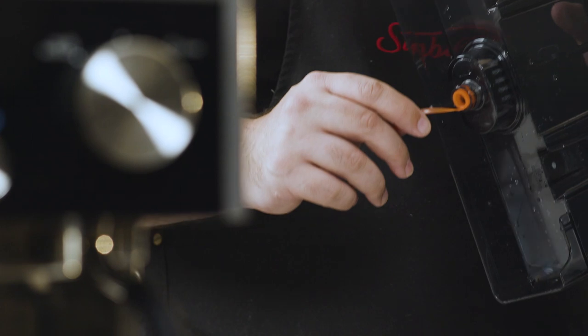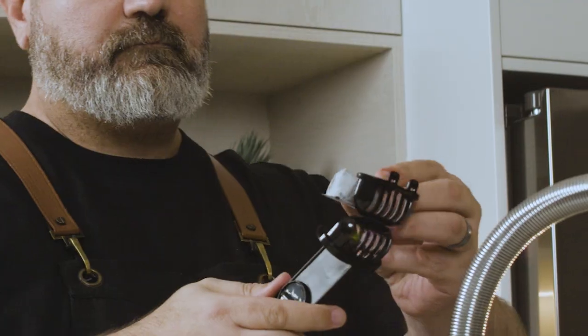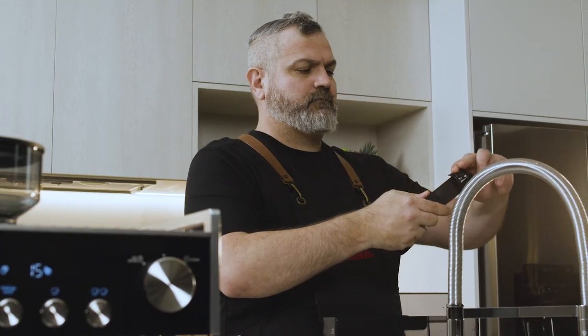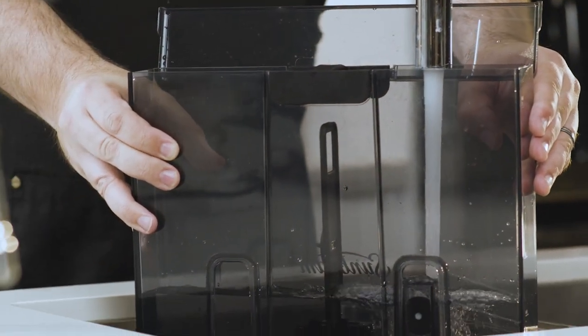Remove the red plug underneath the water tank and install the charcoal filter. When the charcoal filter is installed, fill the water tank with cold water and insert it back into the machine.